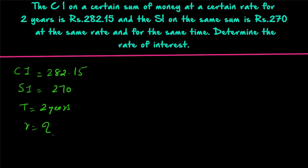We know the equation connecting simple interest and compound interest. Simple interest is equal to r×t divided by 100, into compound interest divided by (1 + r/100) raised to t minus 1. We write the representations for simple interest and compound interest and rearrange the formula to get the equation connecting them. However, finding r from this will be a very lengthy process since r appears in the numerator as well.